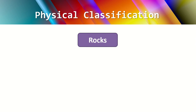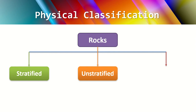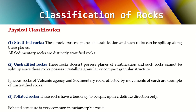Physical classification divides rocks into three types: stratified, unstratified, and foliated. Stratified rocks possess planes of stratification or cleavage — in horizontal, vertical, or diagonal directions — along which they can be easily cut. All sedimentary rocks are examples of stratified rocks.